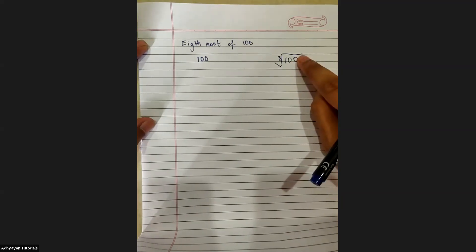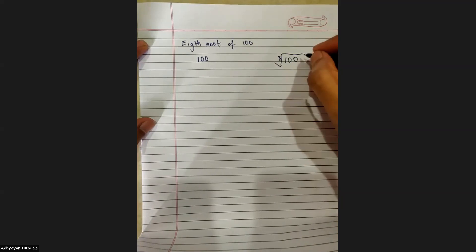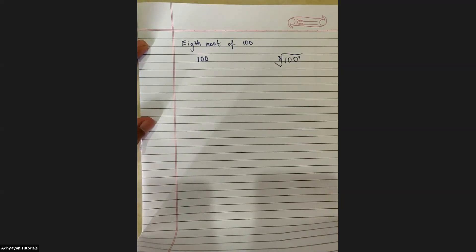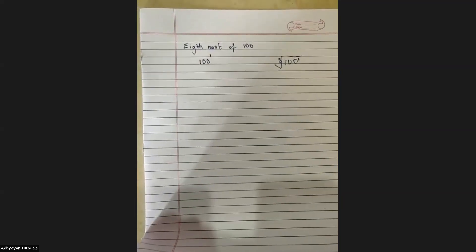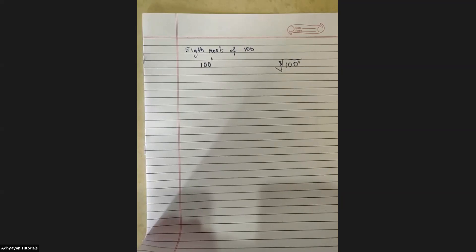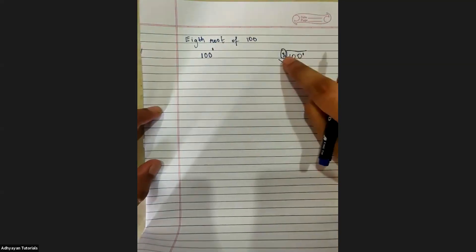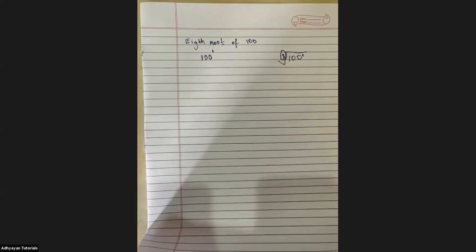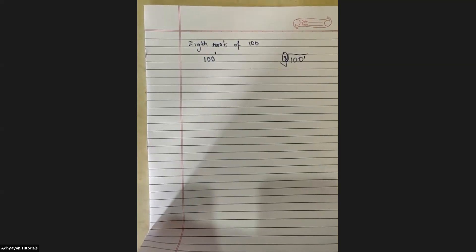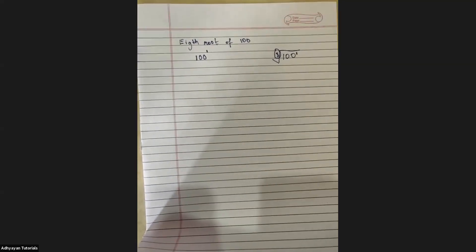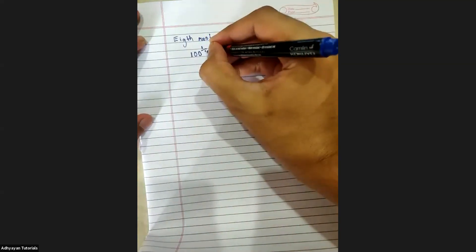When something is here, it is called index or power. The word is order. Where do we put the order? The order will come over here upon it.